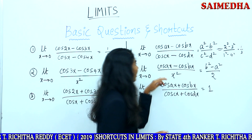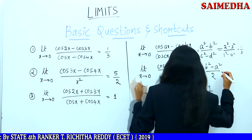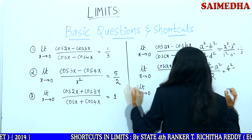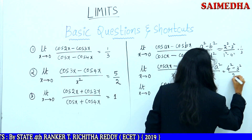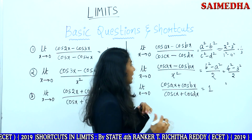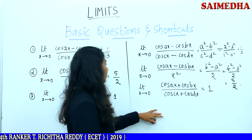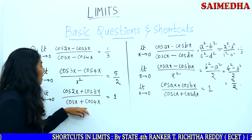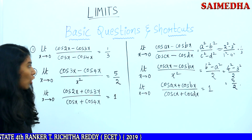Next: here b is 4x, so b is 4. 4 squared minus a squared — a is 3 — 3 squared by 2. What is 4 squared minus 3 squared by 2? It is 5 by 2. Next: cos 2x plus cos 3x by cos x plus cos 4x. When the problem is in terms of cosine with a plus symbol, the answer is directly 1.